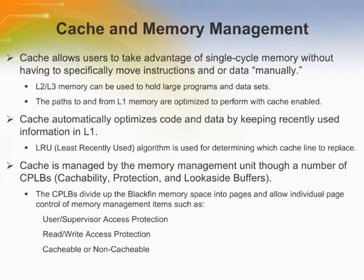Cache automatically optimizes code and data by keeping recently used information in L1. There is an algorithm called LRU — least recently used. We have several ways to store a cache line in internal memory. Once all four ways are filled and we need space for another cache line, the LRU algorithm designates whichever cache line was used the longest time ago as the first one to give up its space to the new cache line.